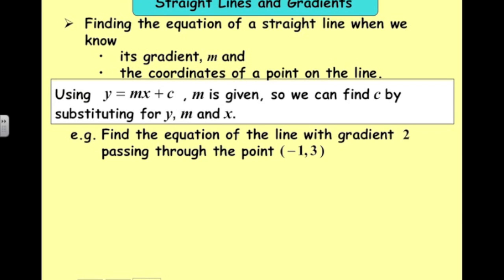Here's an example, and we're going to use this technique a lot. We want to find the equation of a line with a particular gradient going through a particular point. So in this case, we haven't got the y-intercept, we've got another point on the line.